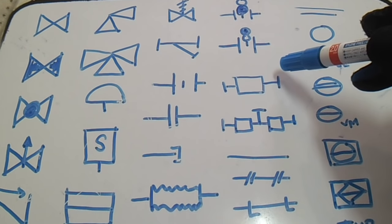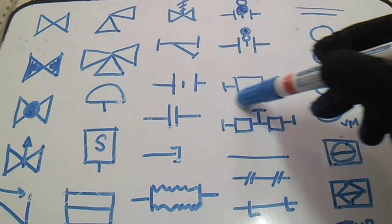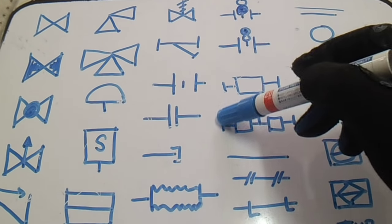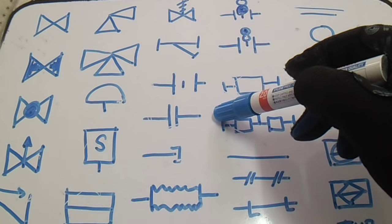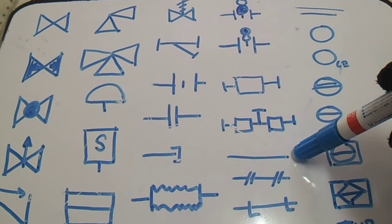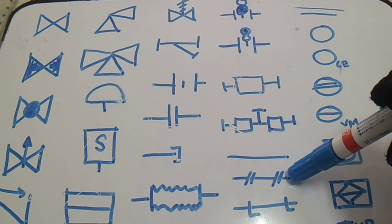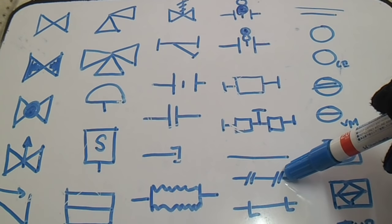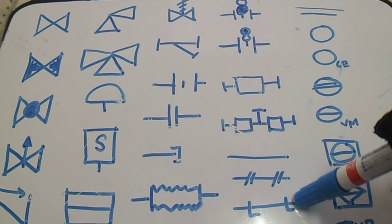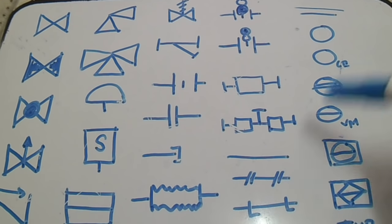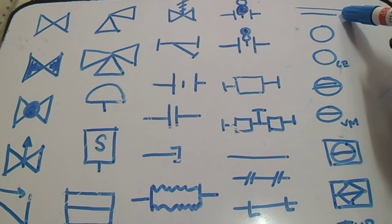This is a two-valve manifold, and we have a five-valve manifold with their symbols. Next, we have a process line, a pneumatic signal, and a hydraulic signal — the hydraulic signal has the letter 'L'.